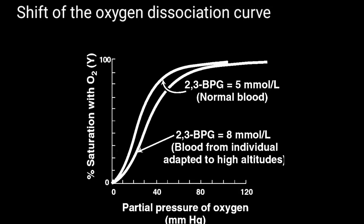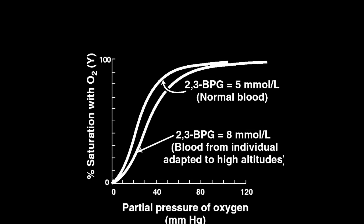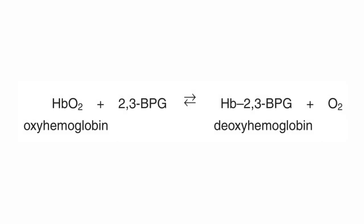Regarding the shift of the oxygen dissociation curve by 2,3-BPG: 2,3-BPG significantly reduces the affinity of hemoglobin for oxygen, due to which it shifts the oxygen dissociation curve to the right. On oxygenation of hemoglobin, 2,3-bisphosphoglycerate is expelled from the pocket and the oxyhemoglobin attains the R form.